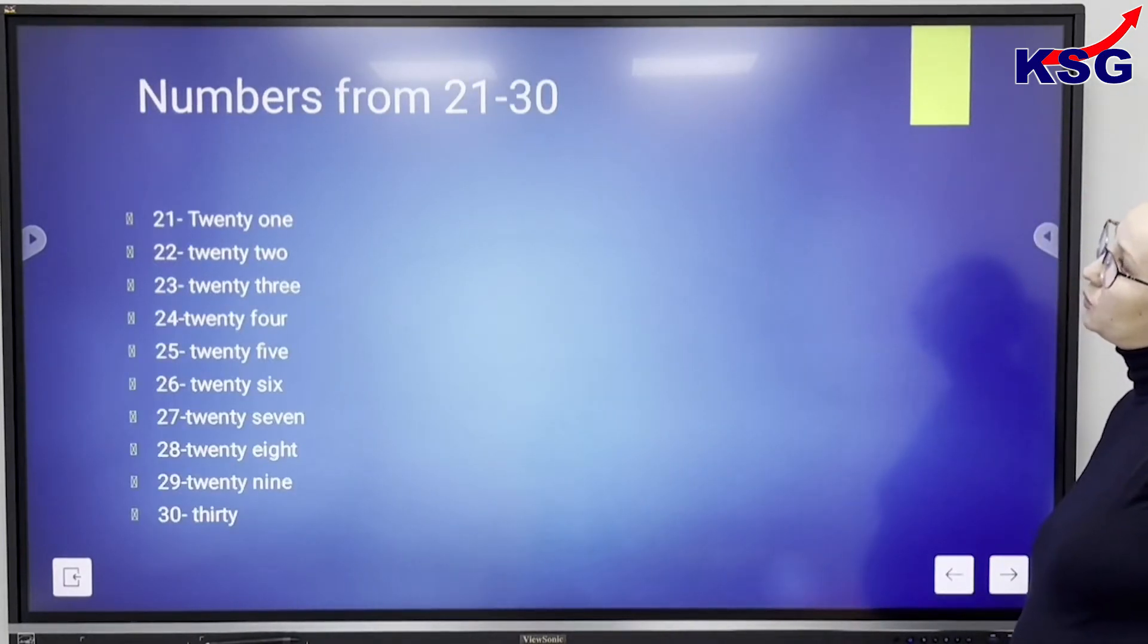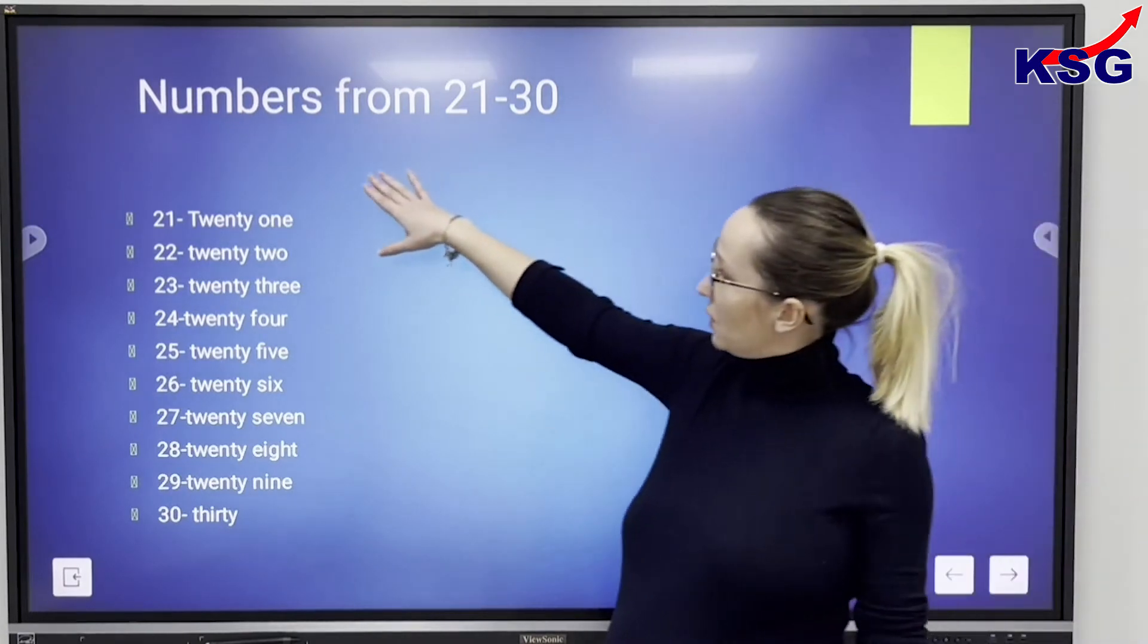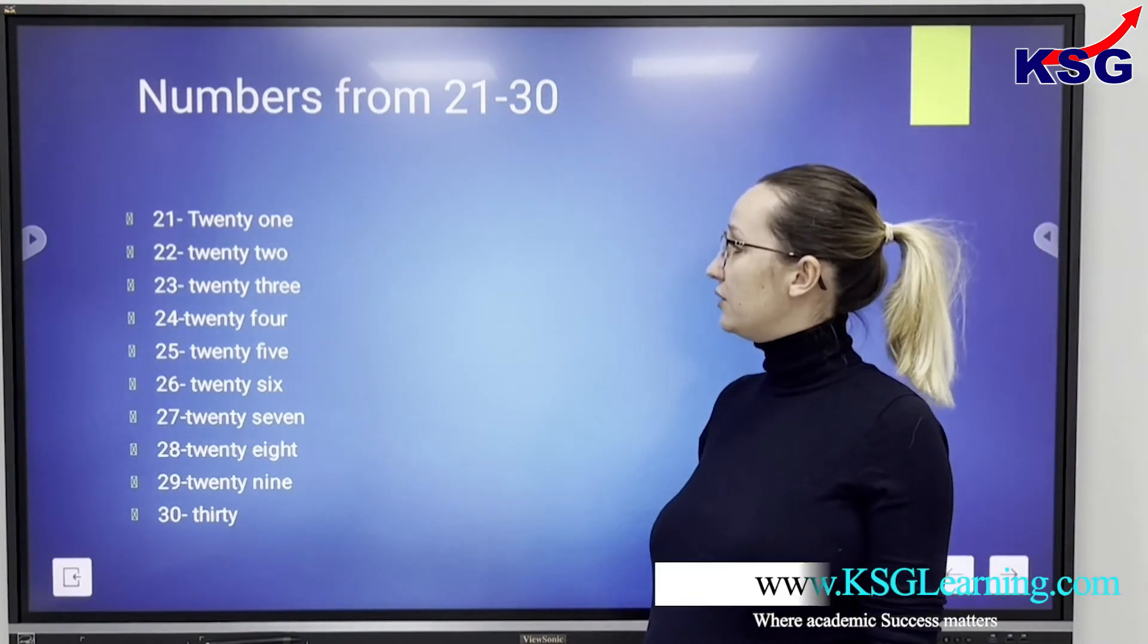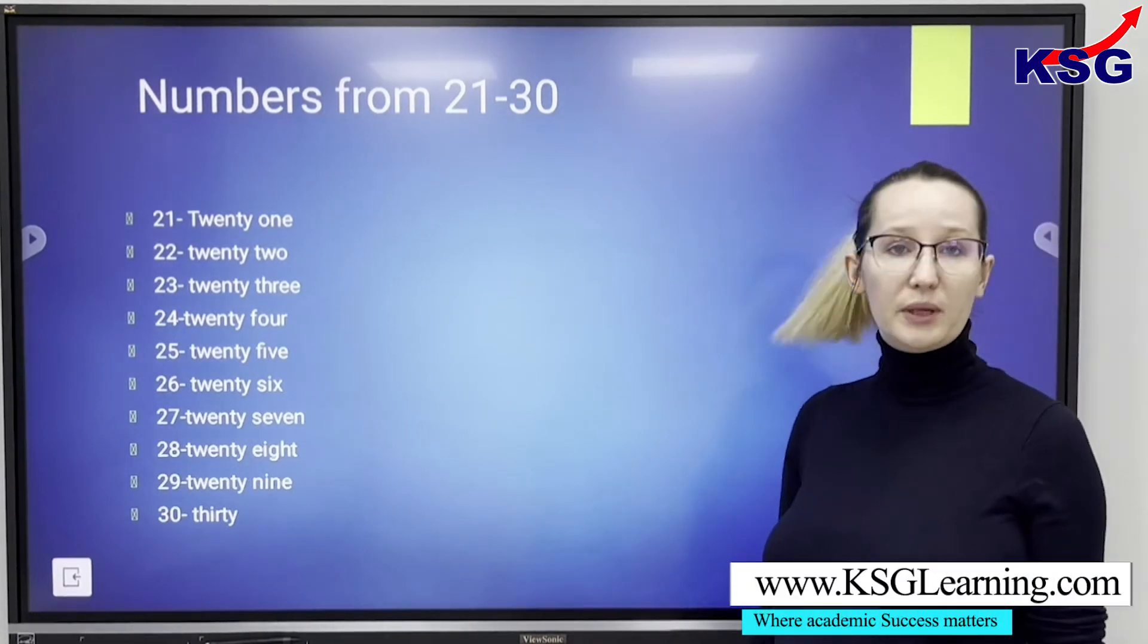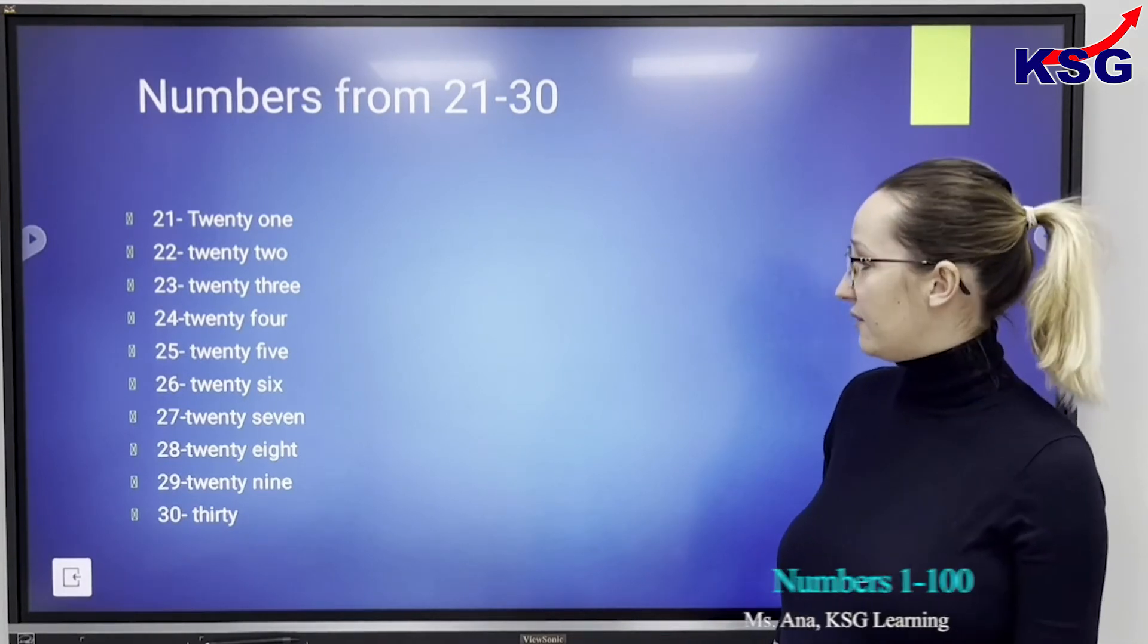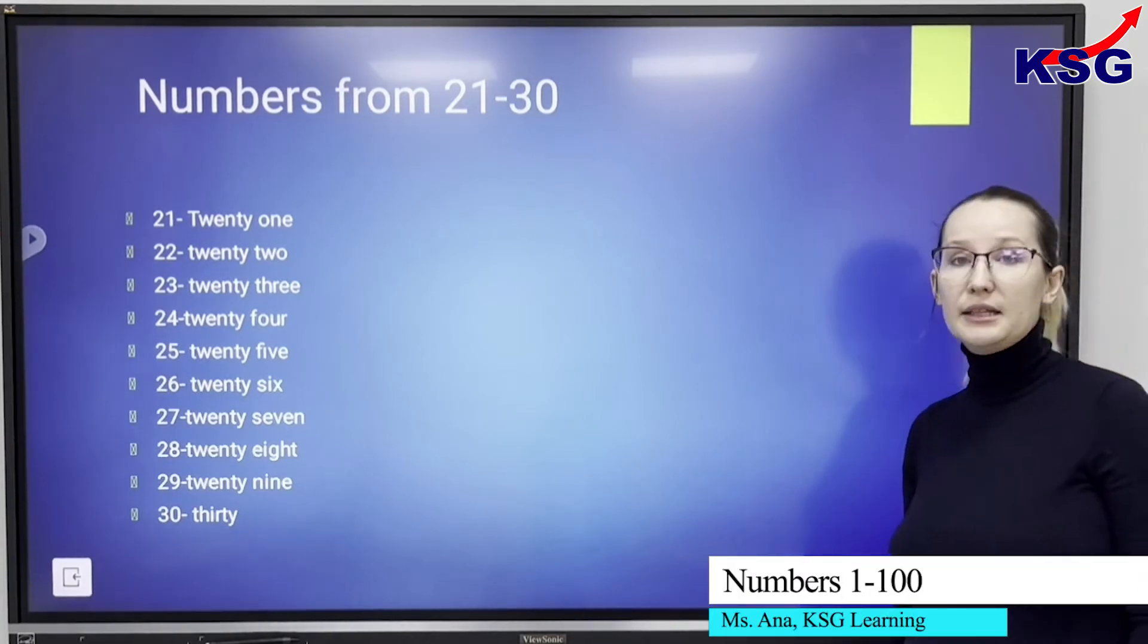Numbers from 21 to 30. You have 21, 22, 23, 24, 25, 26, 27, 28, 29 and 30.